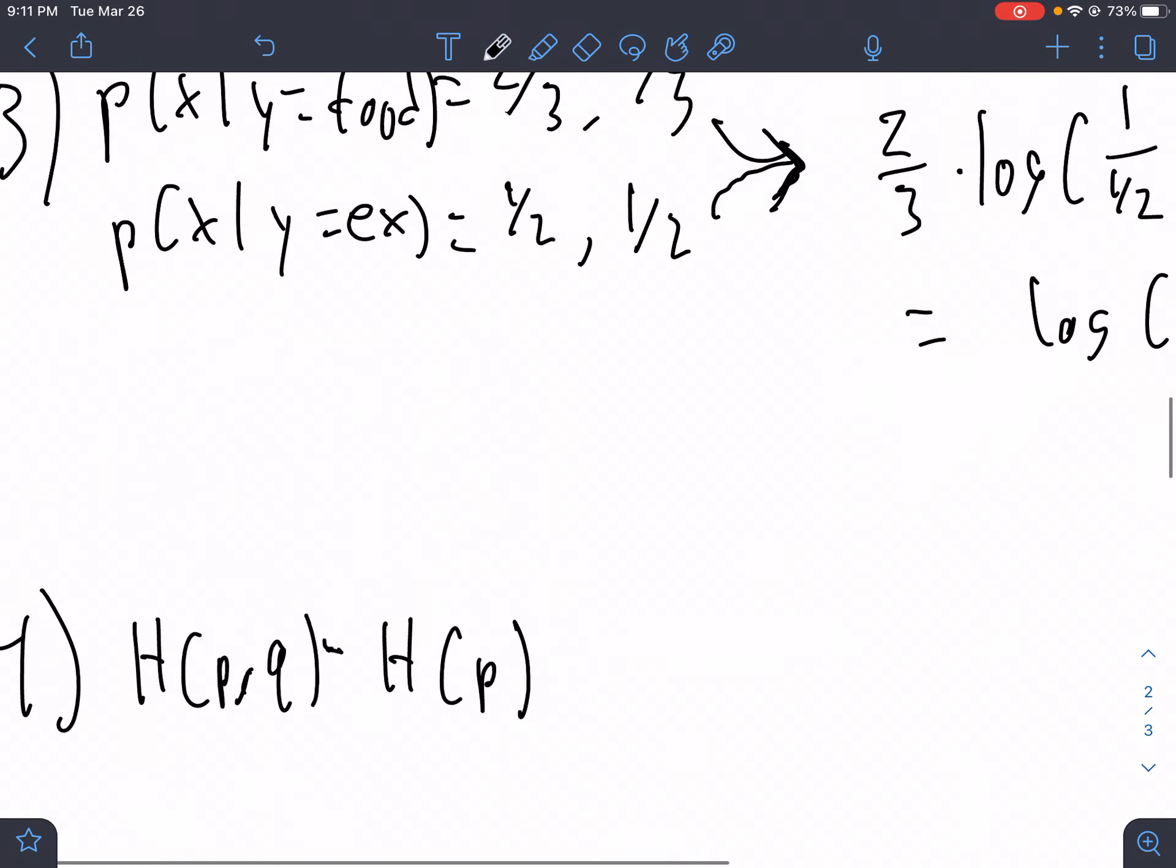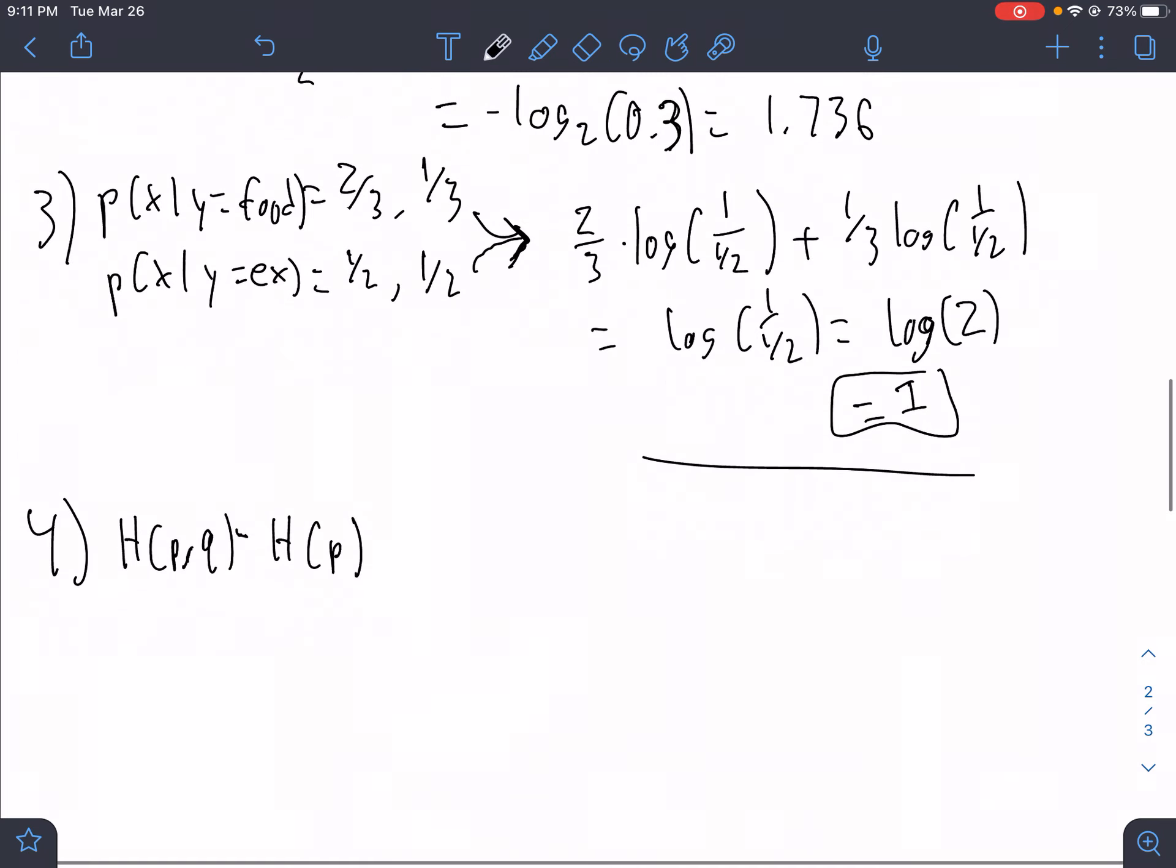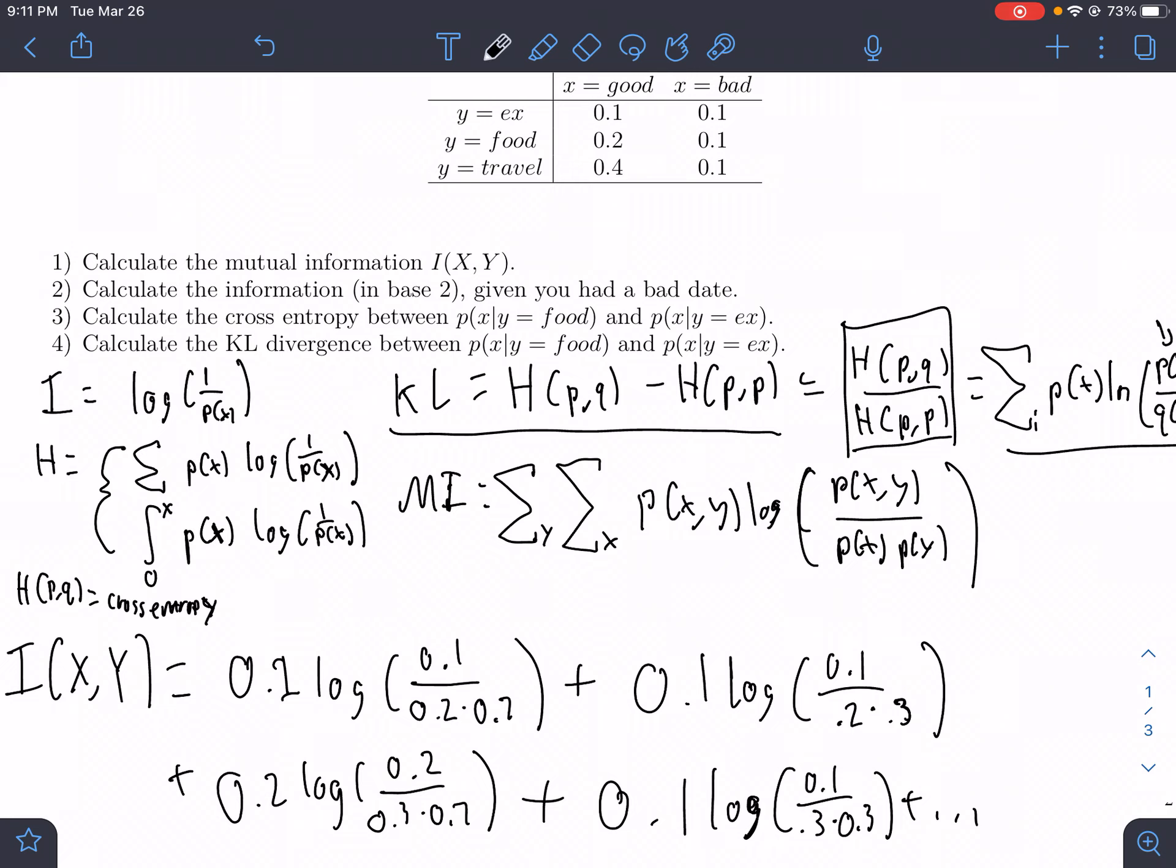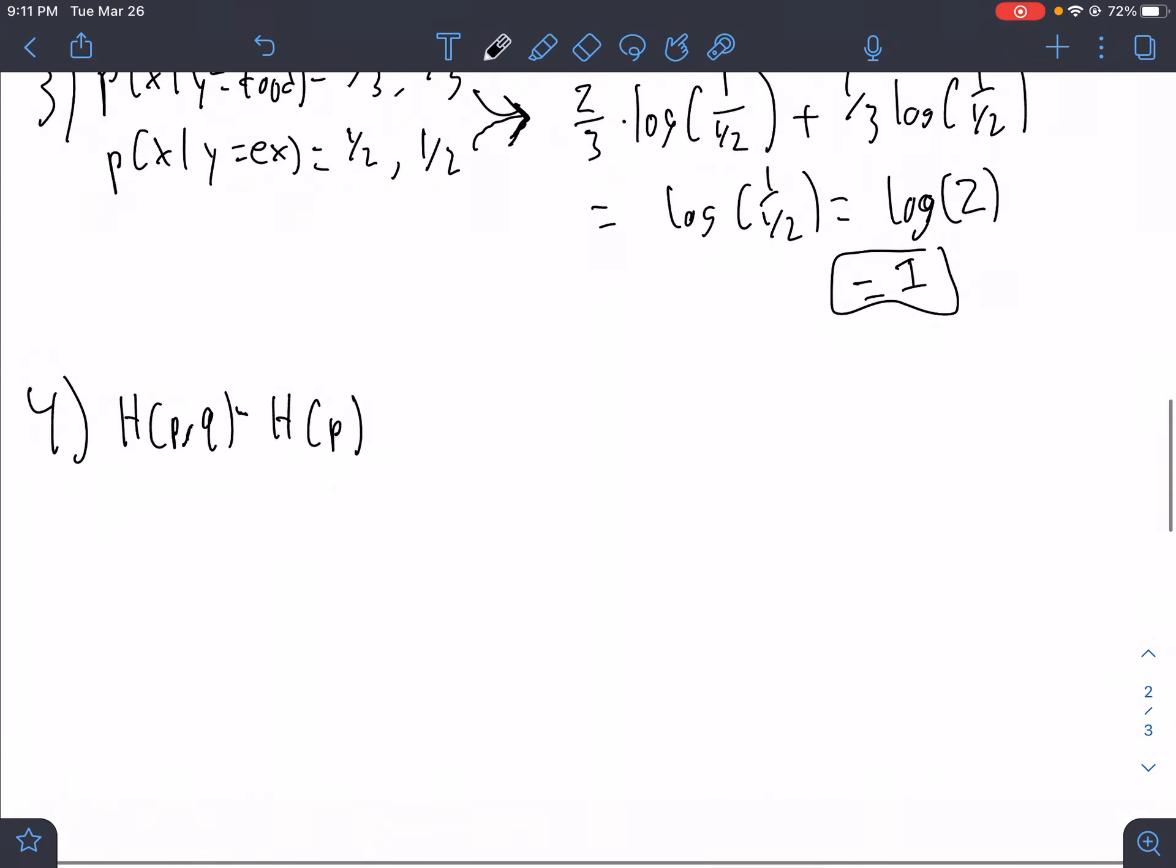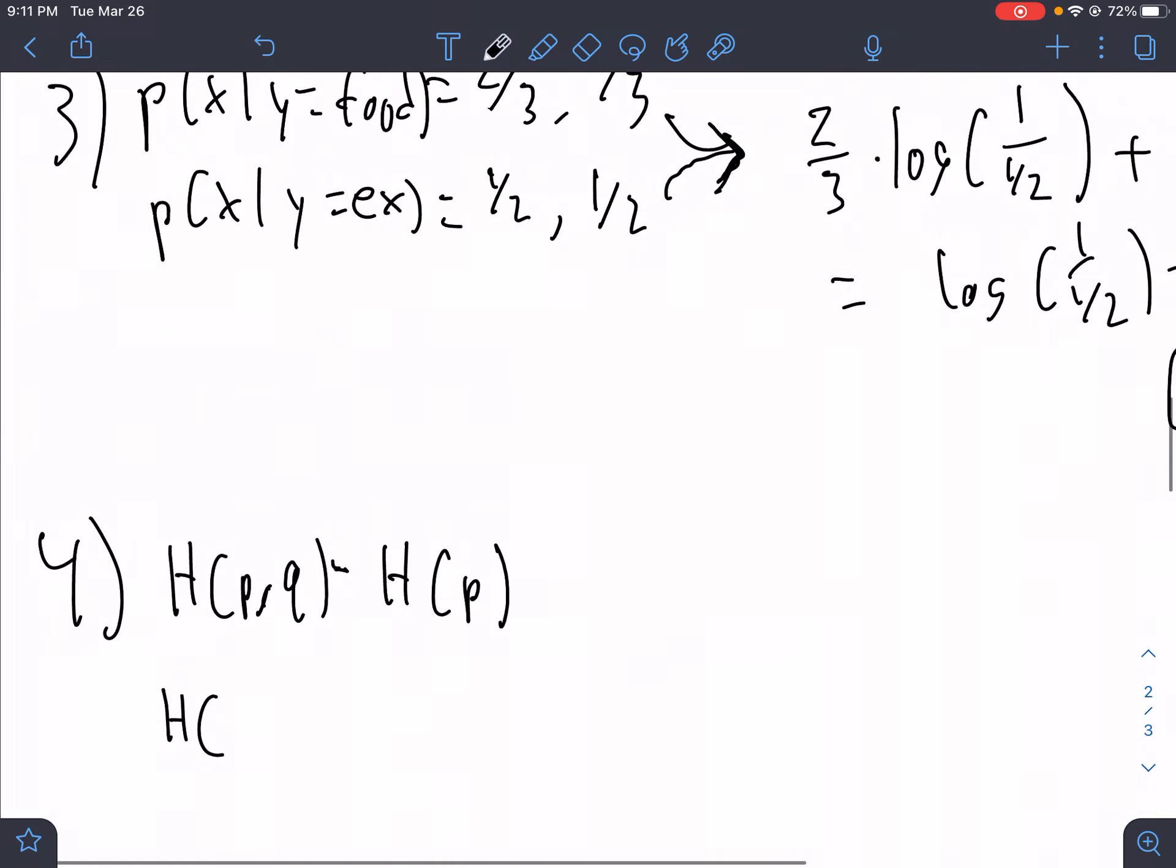And so we have H of PQ. We calculated that here. Right? Yep. And then we need to calculate the entropy of one of the two. So let's do H of X given Y equals food.